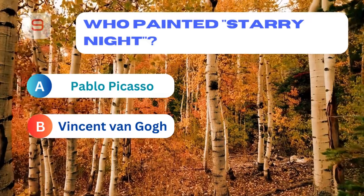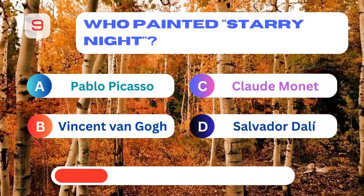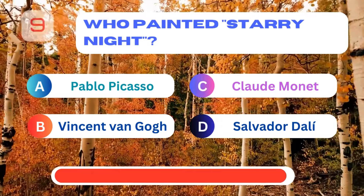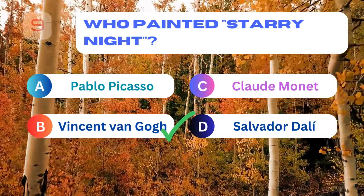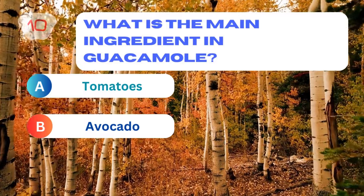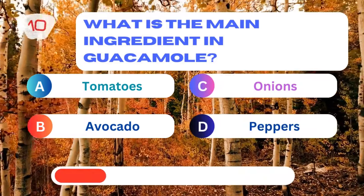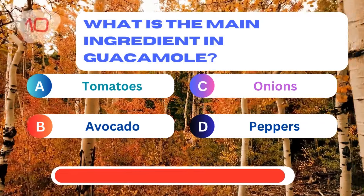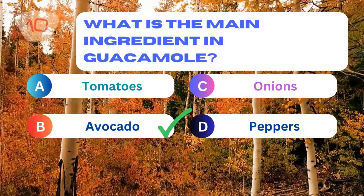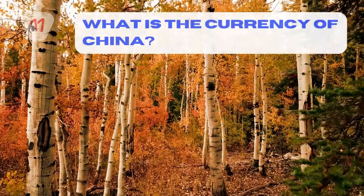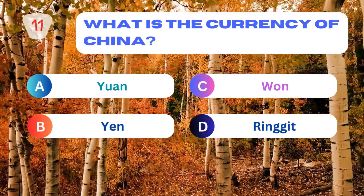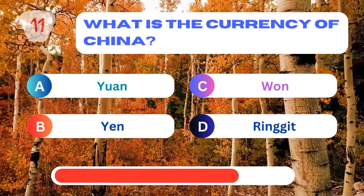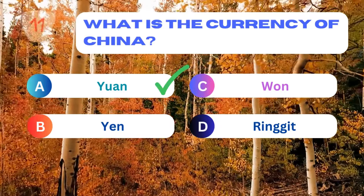Who painted Starry Night? Vincent van Gogh. What is the main ingredient in guacamole? Avocado. What is the currency of China? Yuan.